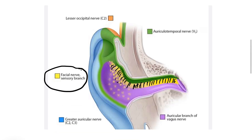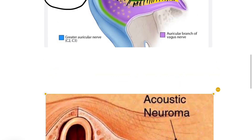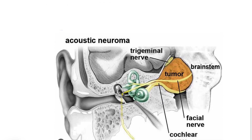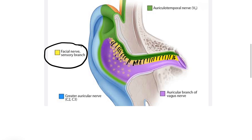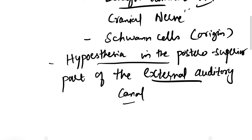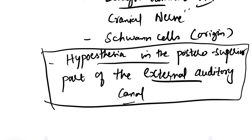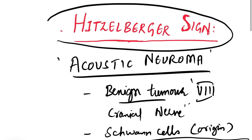Why is there decreased sensation? Because the facial nerve which is supplying this area is compressed in the condition acoustic neuroma. You can see in another diagram how this tumor is compressing the facial nerve, which supplies the sensory fibers to the posterior superior part of the external auditory canal. This hypoesthesia in the posterior superior part of the external auditory canal is termed as the Hitzelberger sign.